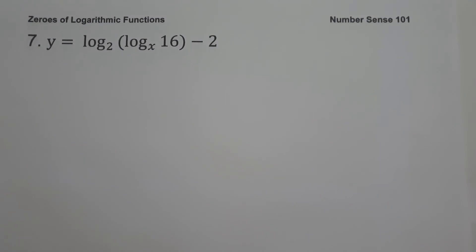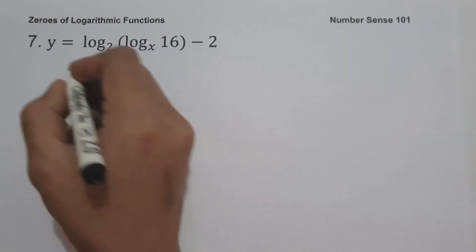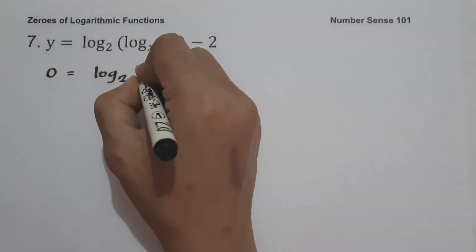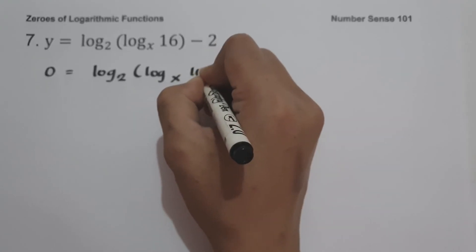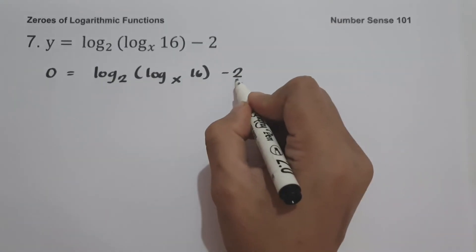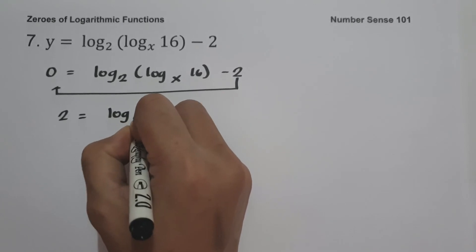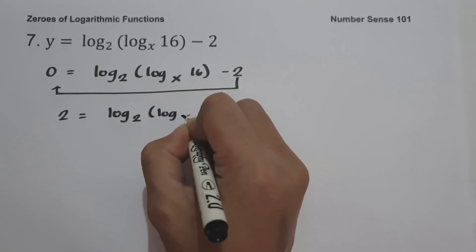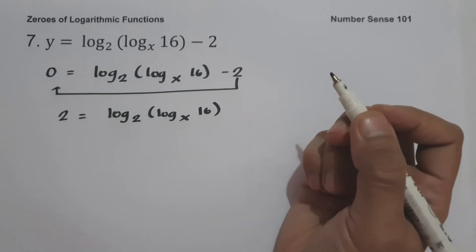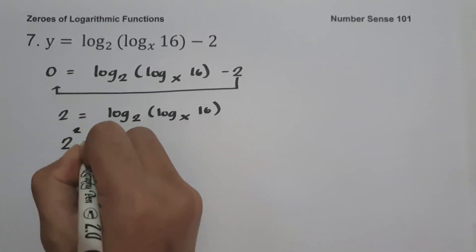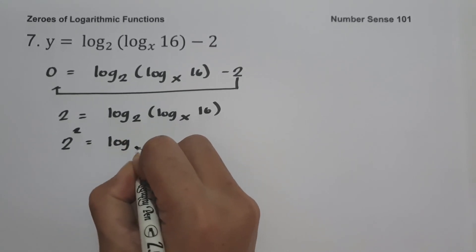On our last example: y equals log base 2 of (log base x of 16) minus 2. To find the zero, let us equate the function equal to zero: zero equals log base 2 of (log base x of 16) minus 2. Moving negative 2 to the other side: 2 equals log base 2 of (log base x of 16). Converting to exponential form: 2 raised to 2 equals log base x of 16.